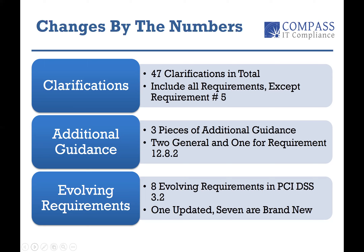The third area — and this is the big one — is what's called evolving requirements. An evolving requirement is actually a change to either an existing requirement, an enhancement, or in some cases, a creation of a new sub-requirement. Normally they don't come out with a new major requirement, but they'll put a sub-requirement in or move some of the requirements around to ensure the standards are up to date with current threats and market changes. In PCI version 3.2, there were eight evolving requirements — one is an update, but seven are brand new, with a couple having been split off and enhanced from existing requirements.